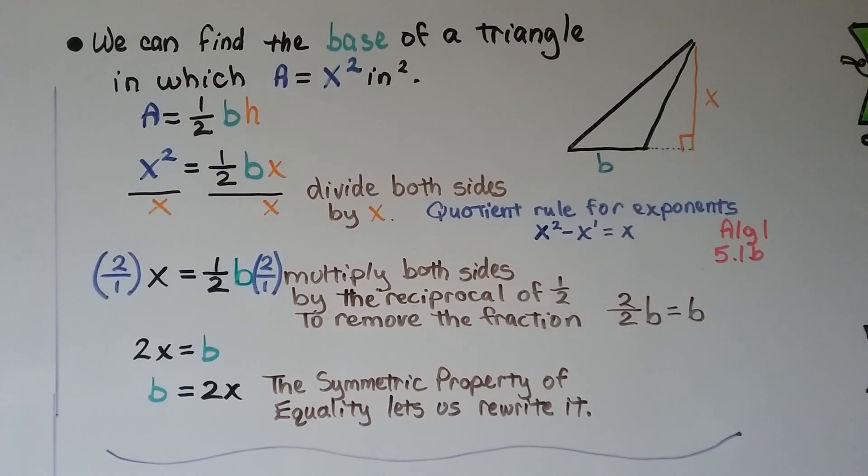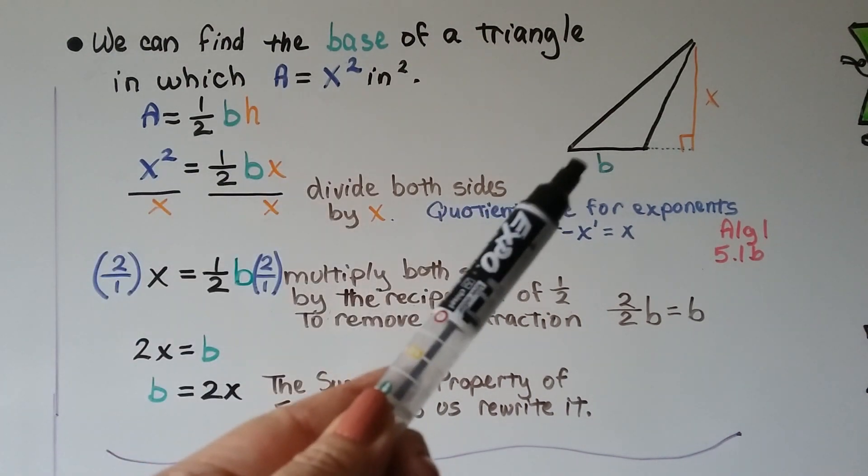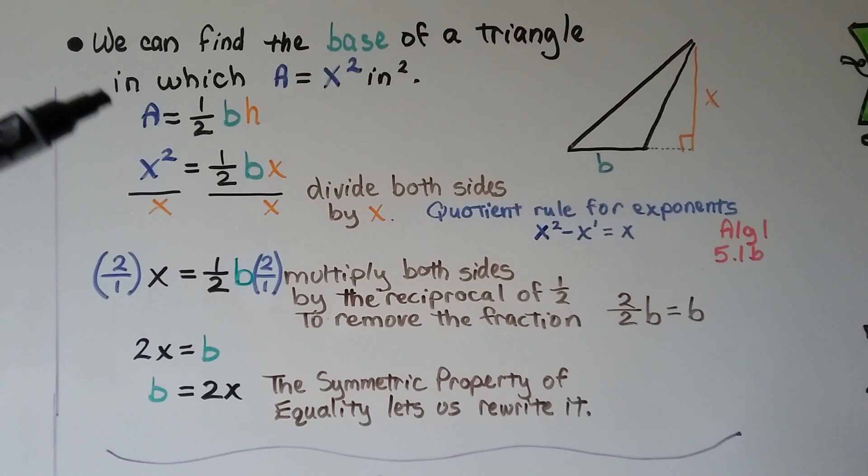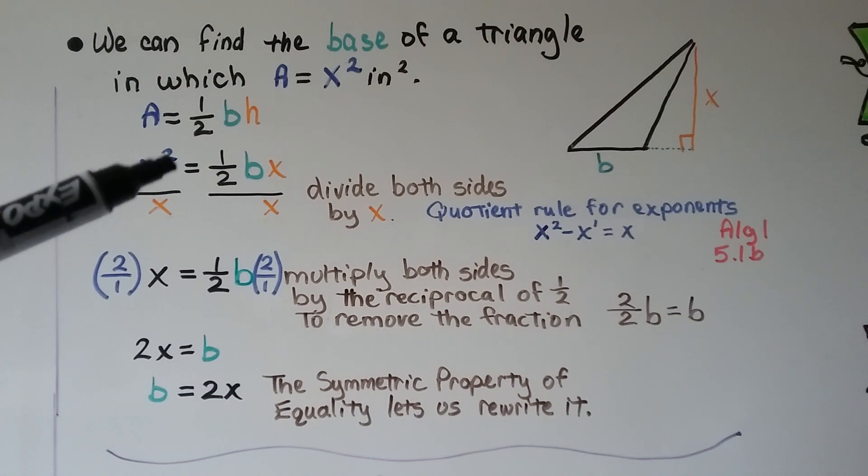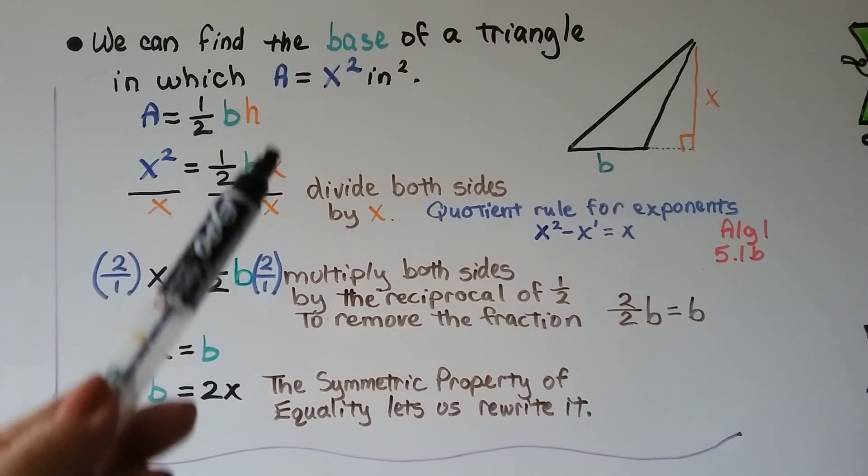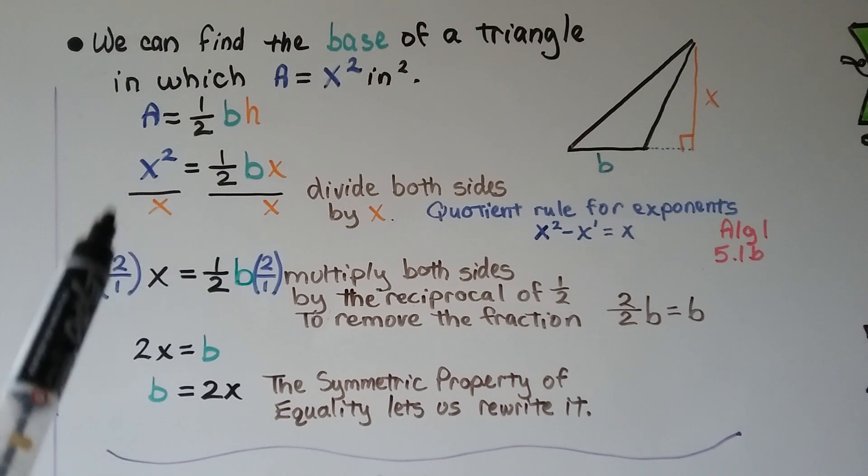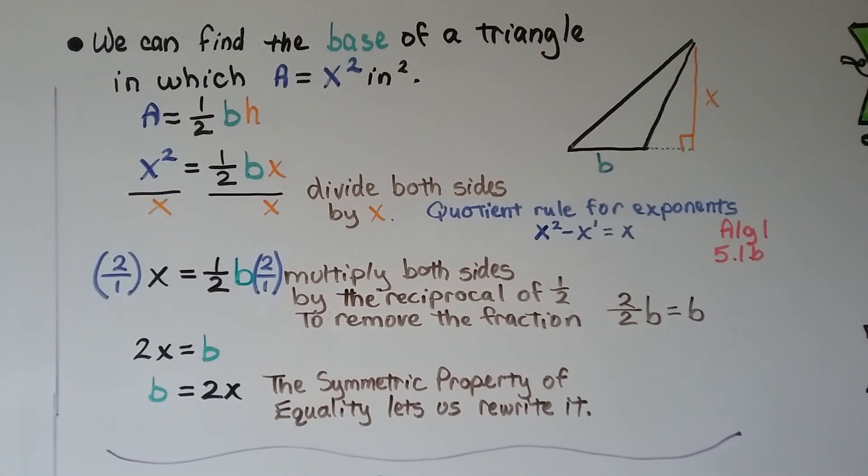We can find the base of a triangle in which the area is equal to x squared inches squared. So we're looking for this b, this base. Here's the formula for the area of a triangle, and if we know A is equal to x squared, we can put that in place for A, and it's going to equal half bx, because we're given that the height is x. So we're going to use x instead of h, and we can divide both sides by x to eliminate it. Quotient rule for exponents says that we're going to subtract these exponents, and that's really x to the first power. So we would be left with an x.